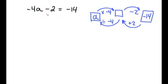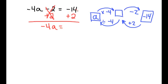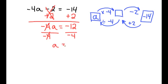The first thing we need to do is undo our subtraction step, so we will use the inverse of subtraction, which is addition — same thing on the right. Negative two and positive two cancel out, leaving us with negative four a equals negative fourteen plus two, which is negative twelve. Next, we need to undo the multiplication step, so we divide by negative four on both sides. Negative four divided by negative four is one, so that cancels out, leaving us with a equals negative twelve divided by negative four, which is three.